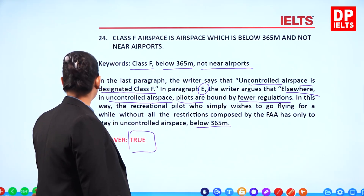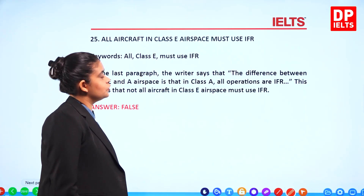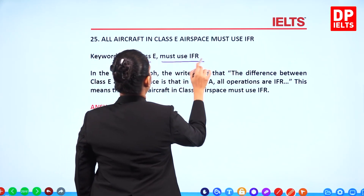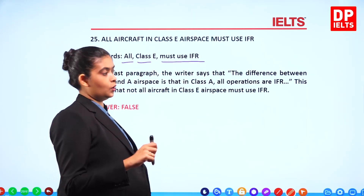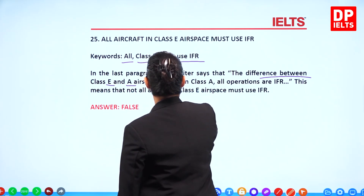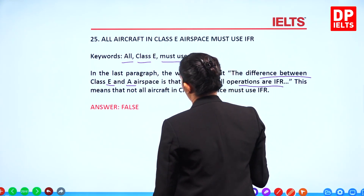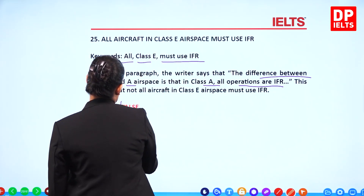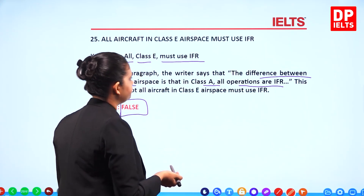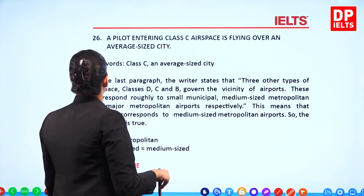Question 25: 'All aircraft in Class E airspace must use IFR.' 'All' is a key word here. In the last paragraph, the writer says the difference between Class E and Class A is that in Class A, all operations are IFR. It is Class A — not Class E — where IFR is mandatory. So the answer is False.